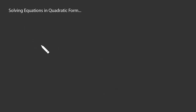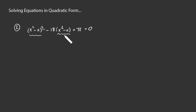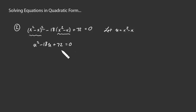For example 2, we have (x squared minus x) squared minus 18 times (x squared minus x) plus 72 equals 0. Noting that we have a constant term, a constant times some expression, and then that same expression squared, we let u equal x squared minus x. Then we can rewrite this as u squared minus 18u plus 72 equals 0, which is a quadratic in terms of u.